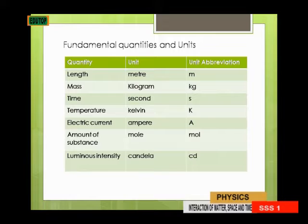As we proceed, we will be able to know the differences among those three units. We also have electric current. Electric current is also an example of a fundamental quantity. The SI unit for electric current is given in Amps — we call this Ampere. The actual symbol is A.